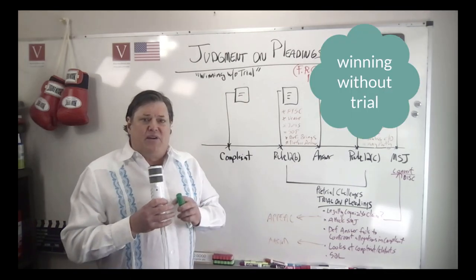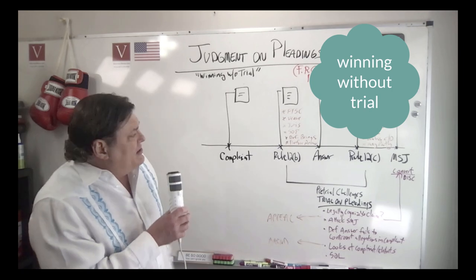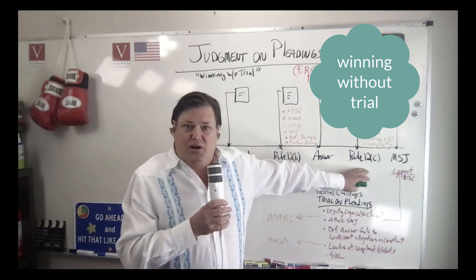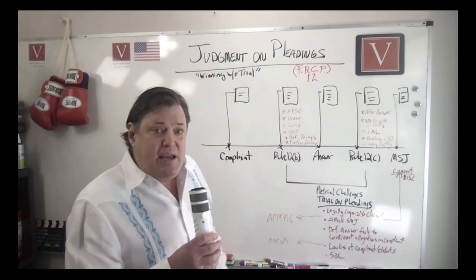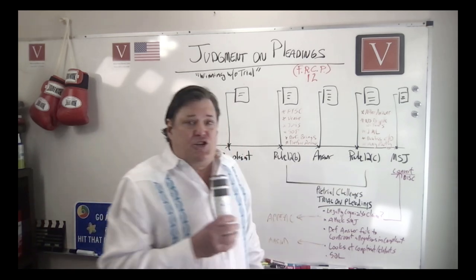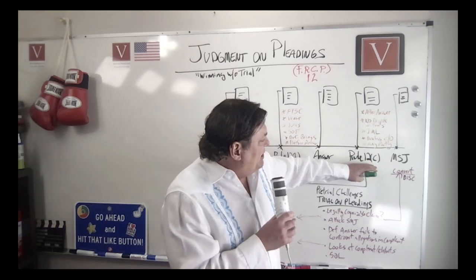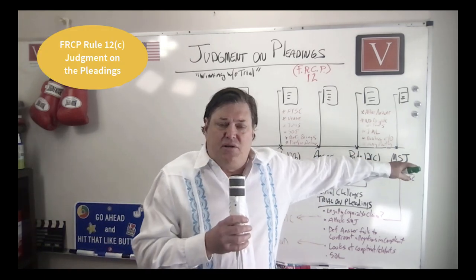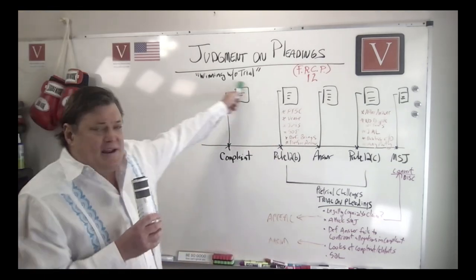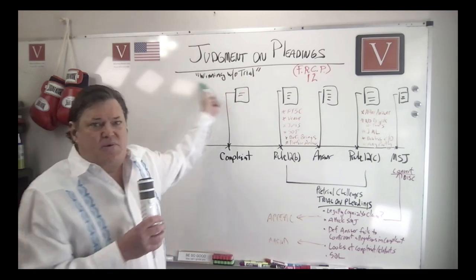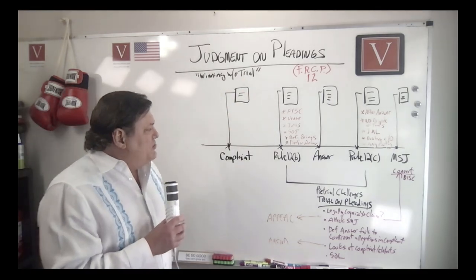The 12(b)(6) is the initial motion you can bring to win without trial. But what we're going to talk about here is judgment on the pleadings - that's Rule 12(c). Along with motions for summary judgment, these are some of the main ways to get rid of a case and win without trial.